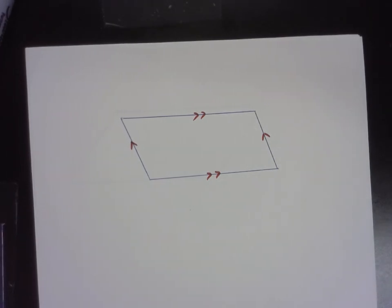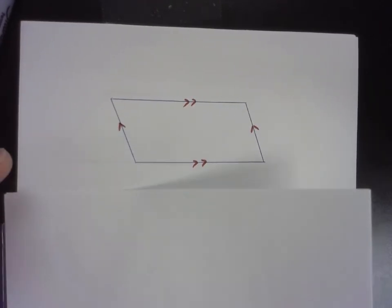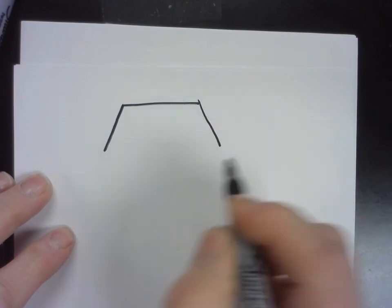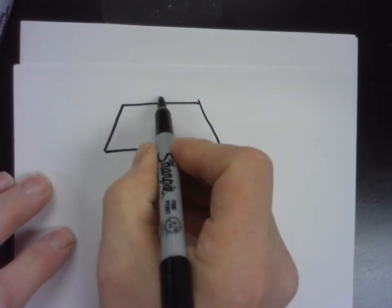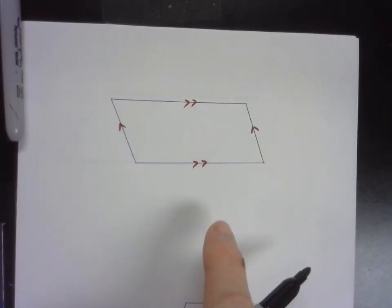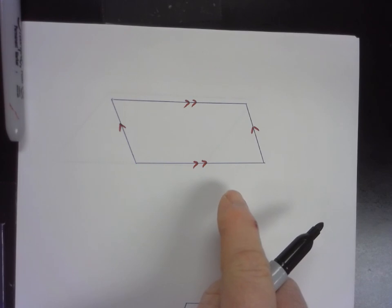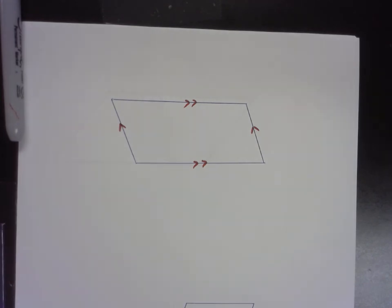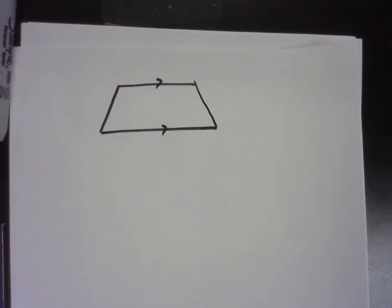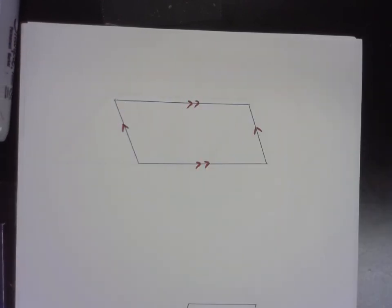A trapezoid is a quadrilateral with exactly one pair of parallel sides, so a trapezoid would look something like this and it would have one pair of parallel sides. A parallelogram has two pairs of parallel sides — see the difference? Parallelogram: two pairs of parallel sides. Trapezoid: exactly one pair of parallel sides.